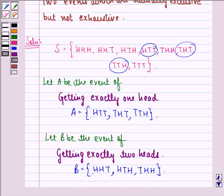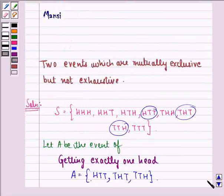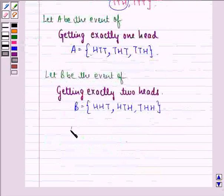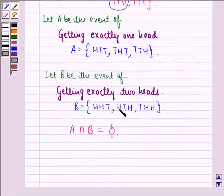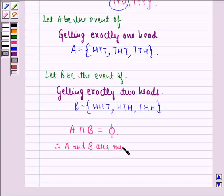Now, we have to show that they are mutually exclusive. That means we see that A intersection B is equal to phi because no element is common to both these sample spaces. Therefore, we can say that A and B are mutually exclusive. And we know that two sets are mutually exclusive only if their intersection is equal to phi, that means if they do not have any element in common.